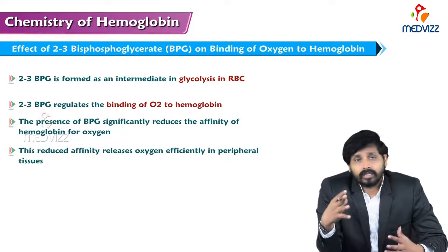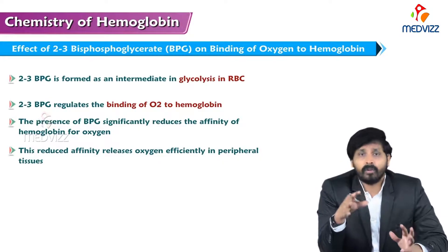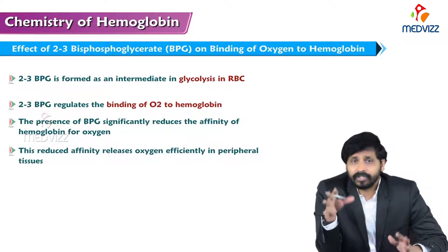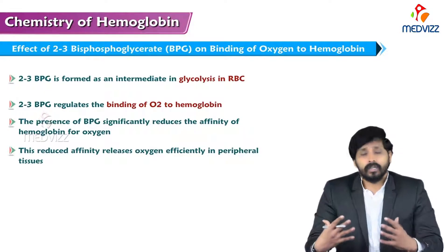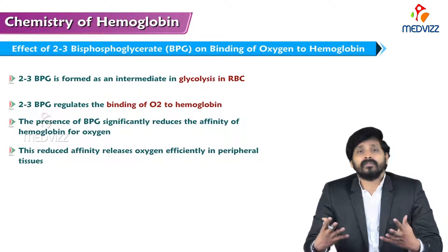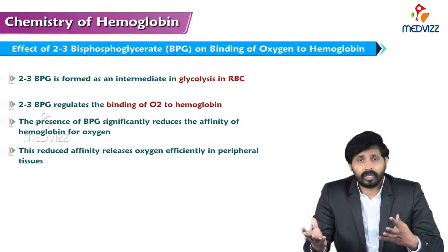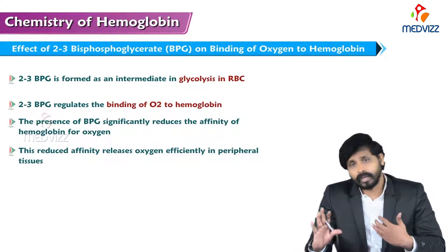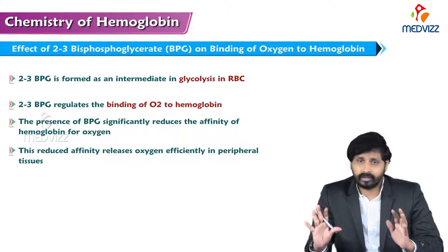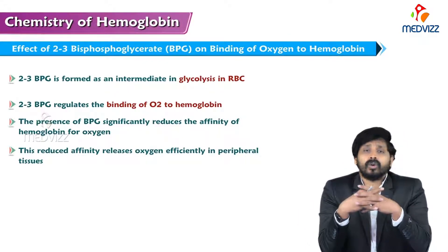2,3-BPG is a product — an intermediate — which is formed in the middle of glycolysis, especially in RBCs. In glycolysis inside the cell cytoplasm, glucose is oxidized to pyruvate, then pyruvate to acetyl-CoA, acetyl-CoA to the TCA cycle, and ATP generation occurs.